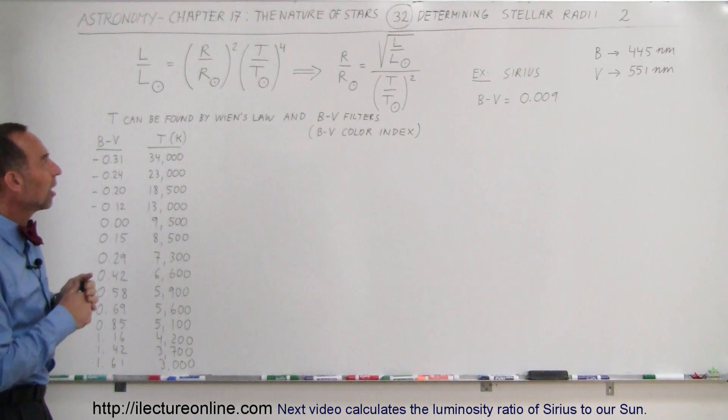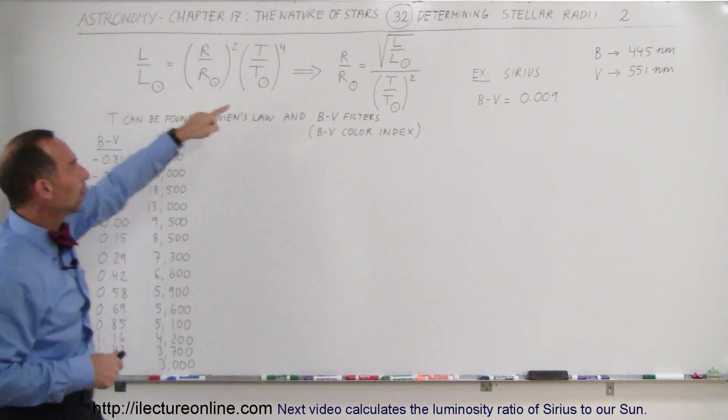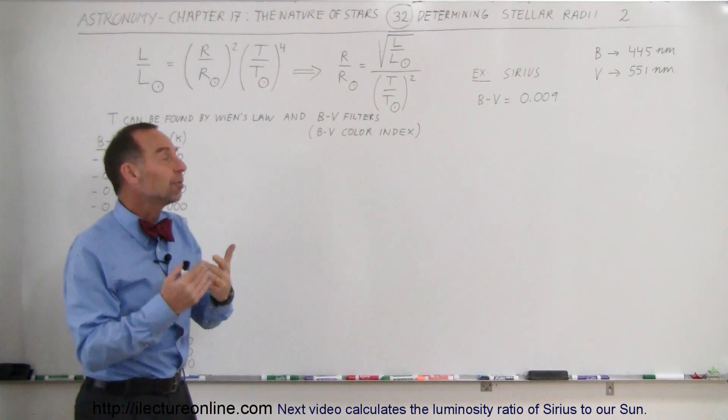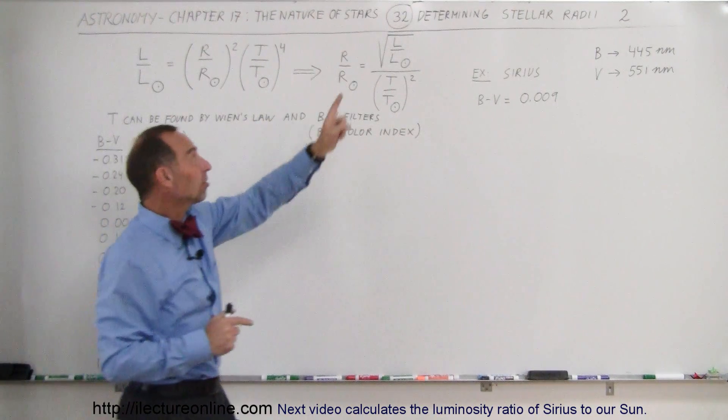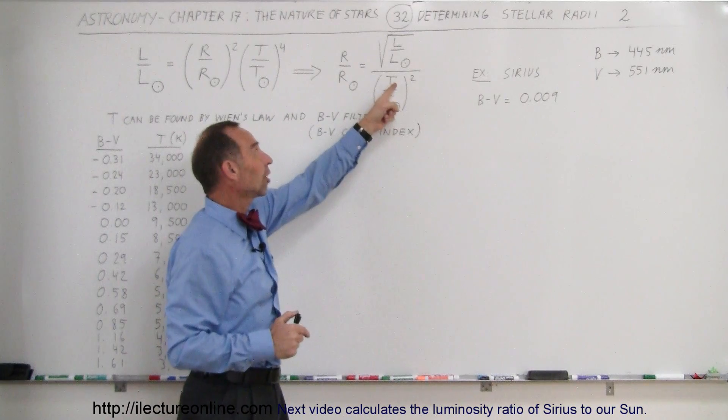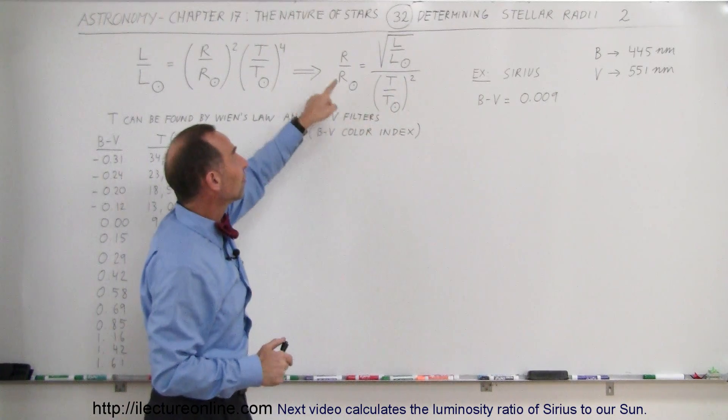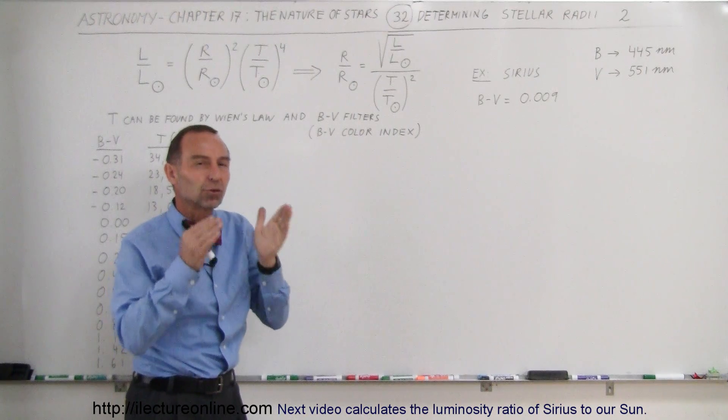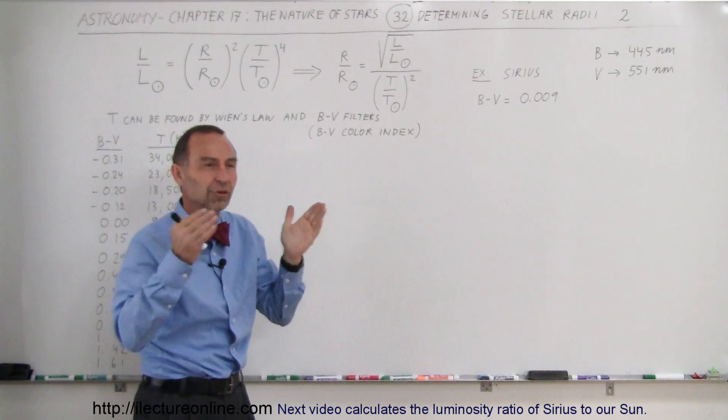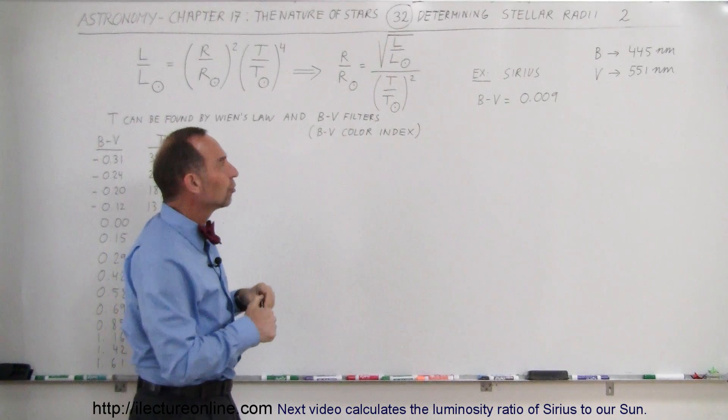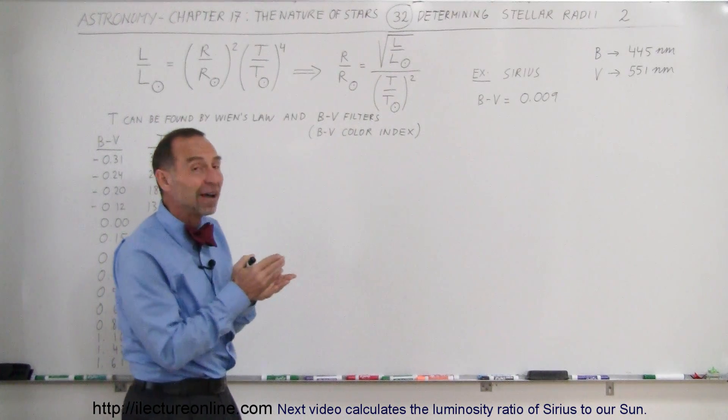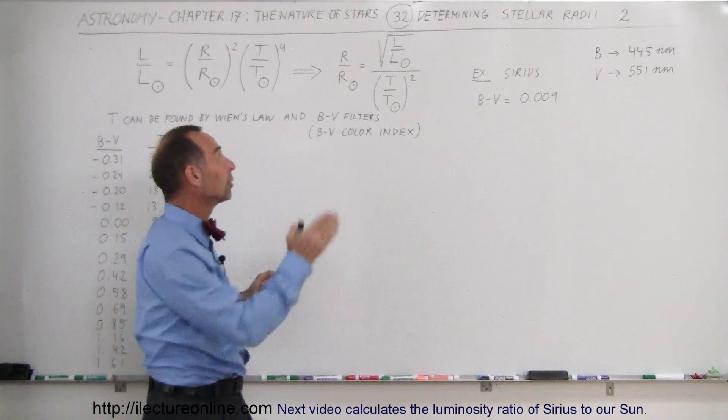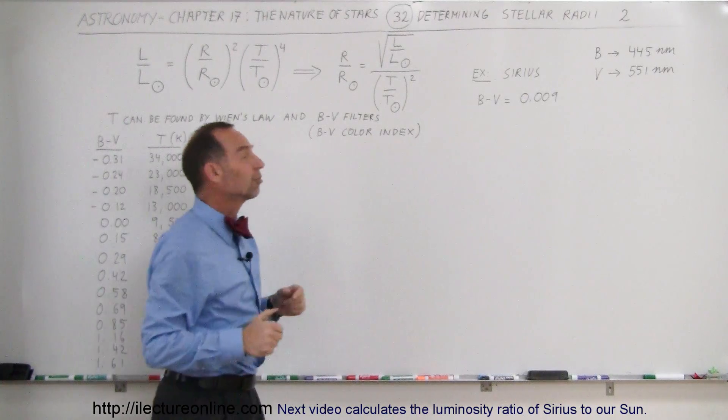That came out of Stefan Boltzmann's law, and we can solve this equation for the radius. If we know the luminosity of a star and we know the temperature of a star relative to the sun, then we can find out the radius of the star relative to the sun. Rather than measuring it directly using telescope and interferometry and occultation or using a binary star system, we can find the radius simply by knowing the luminosity and the temperature.